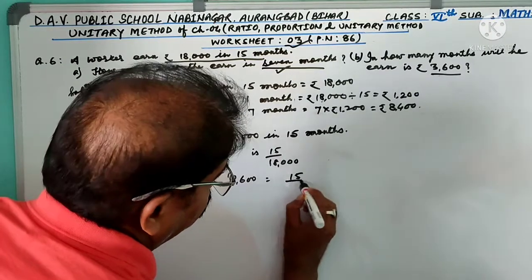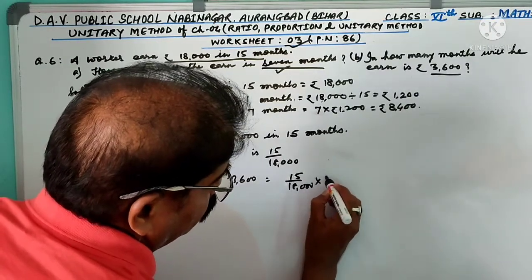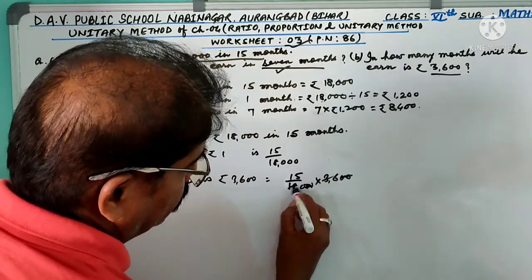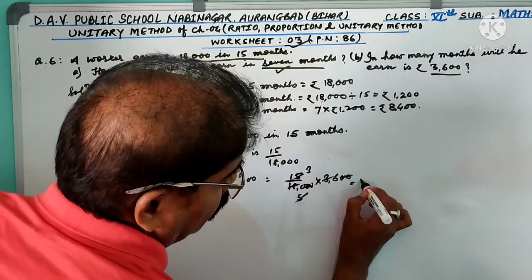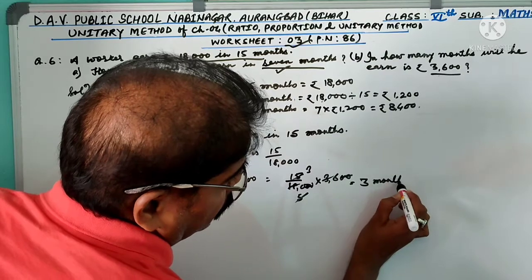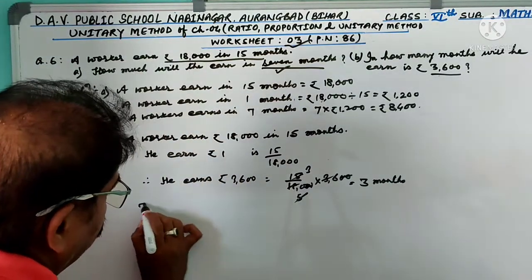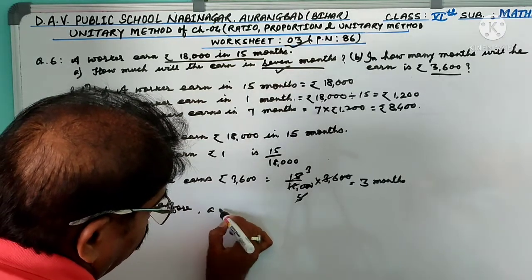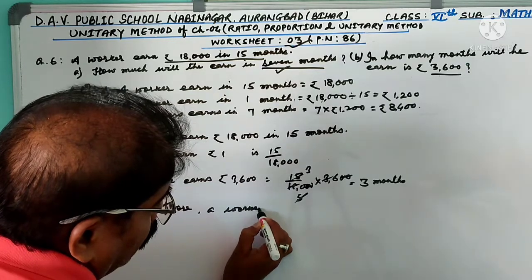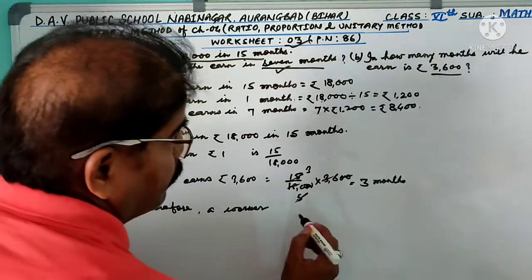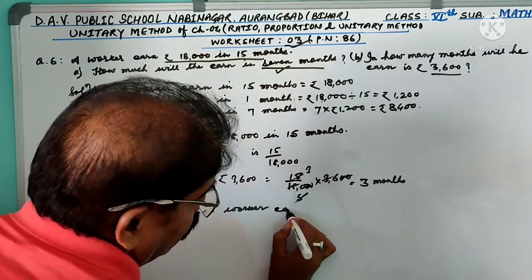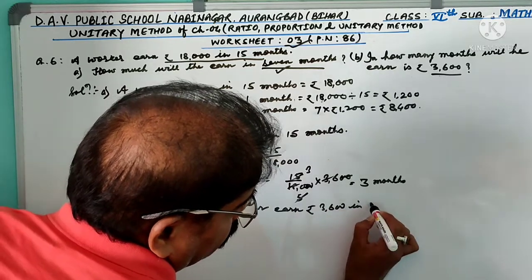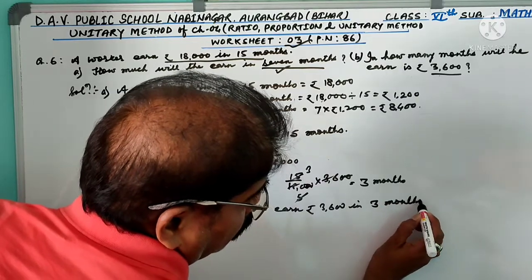So 15 by 18,000 into 3,600. 2 zeros cancel, and 36, 5 zeros. And 5, 3 zeros. That means 3 times 1. Therefore, a worker earned Rs 3,600 in 3 months.